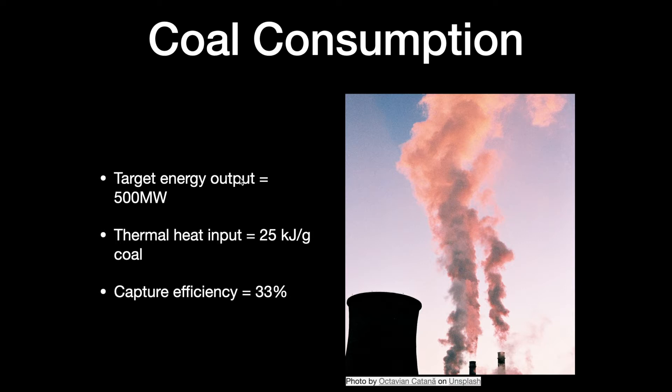obviously. And this is actually on the higher end of what you might expect for a thermal output of coal. It can range anywhere from like 12 kilojoules per gram up to around 28. So, in this case, we're going to be looking at a smaller amount of coal per megawatt of energy output.